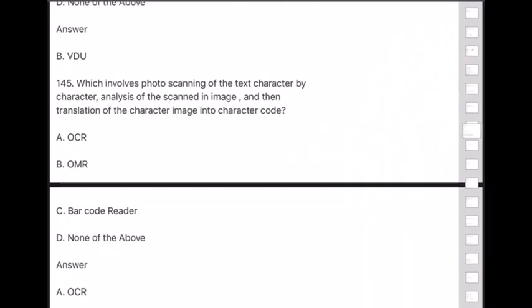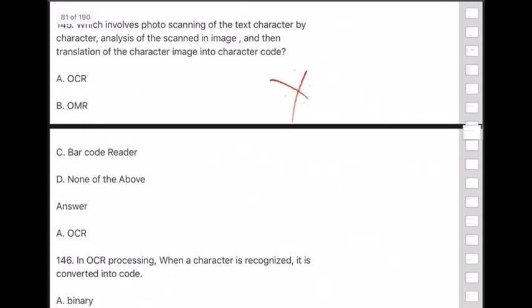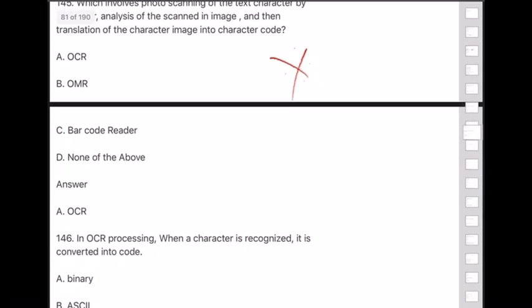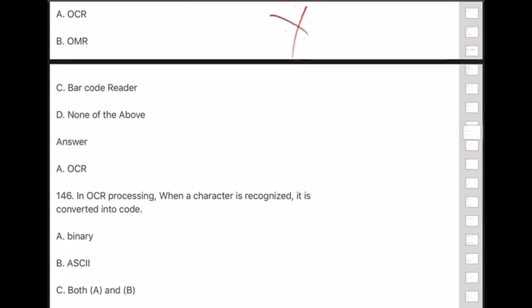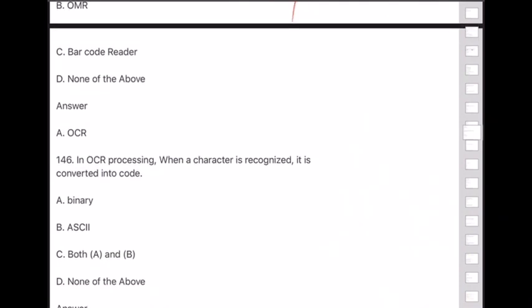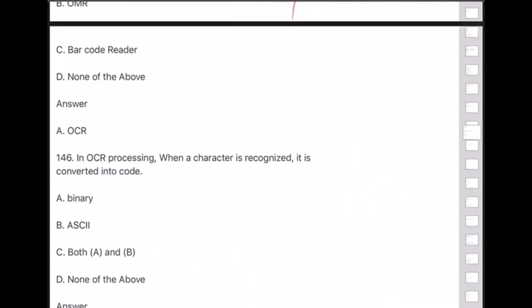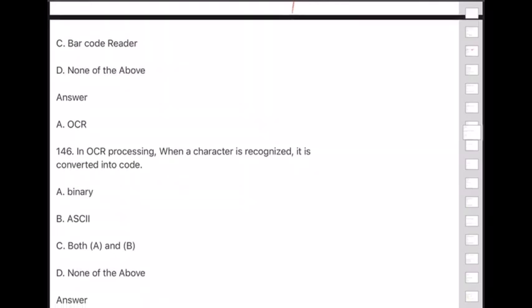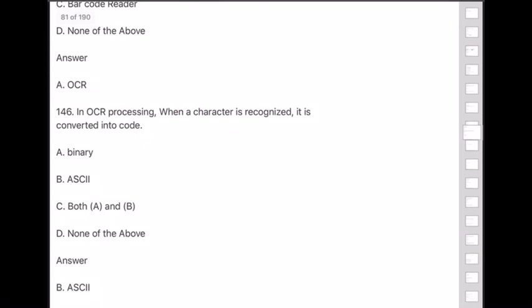Question 146: In OCR processing, when a character is recognized it is converted into — answer is option B — ASCII code.